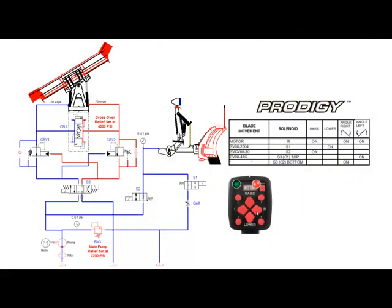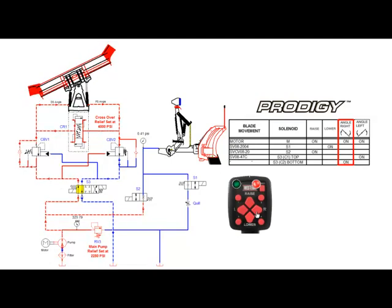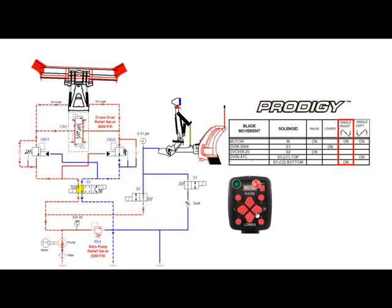Pressing the right function will engage both motor relay and the S3 bottom coil. S3 valve will shift allowing fluid to flow through the counterbalance valve to the driver side angle ram. Fluid from the passenger side angle ram is returned through the counterbalance valve and back to tank. Once the angle ram is fully extended, fluid will flow through RV3 and back to tank.